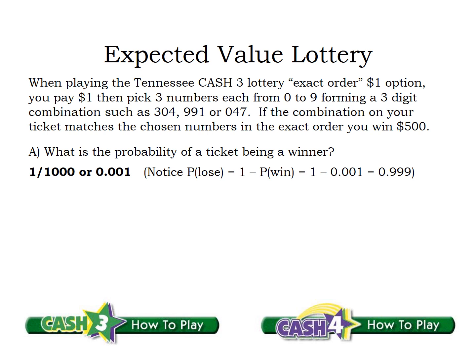Notice that if there's a one in 1,000 chance you have the winner, that means there's a 999 out of a thousand chance your ticket is going to be a loser. Remember, losing and winning are complements from probability. So the probability of having a losing ticket is one minus the probability of having a winning ticket, which is 0.999.